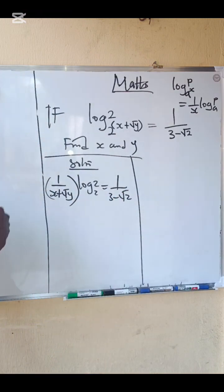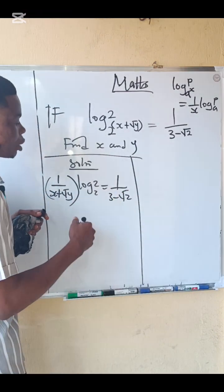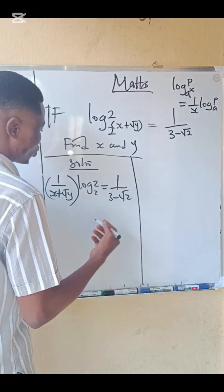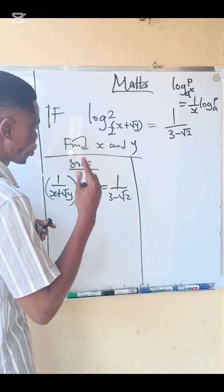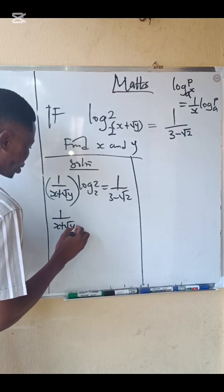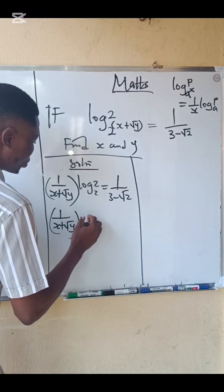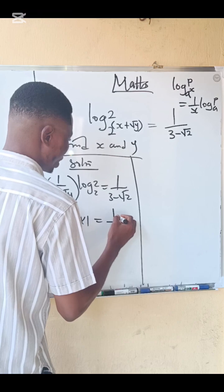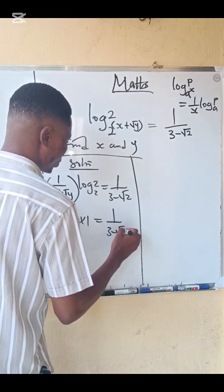Remember that logarithm of a number to its own base equals 1. So we have 1 over (x plus root y) multiplied by 1 equals 1 over (3 minus root 2).